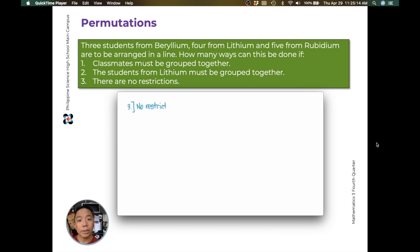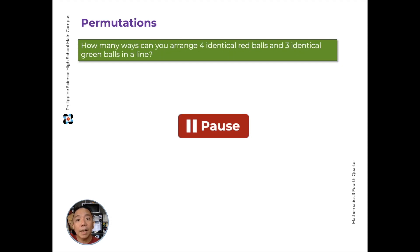Finally, if there are no restrictions, we're just looking at the total number of students, which is 12 students. And this is 12 factorial. And 12 factorial is just 479,001,600 ways.